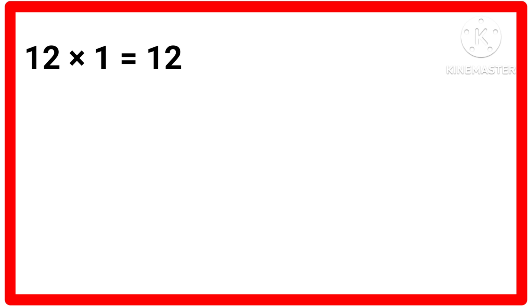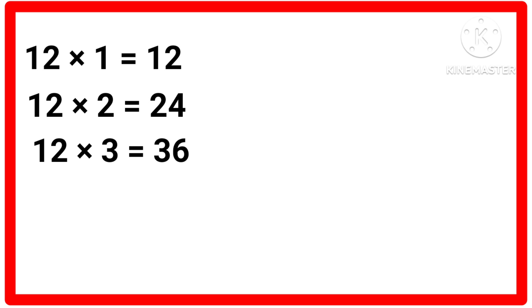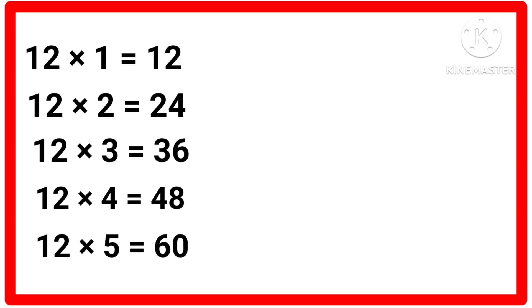Table of 12. 12 ones are 12, 12 twos are 24, 12 threes are 36, 12 fours are 48, 12 fives are 60.